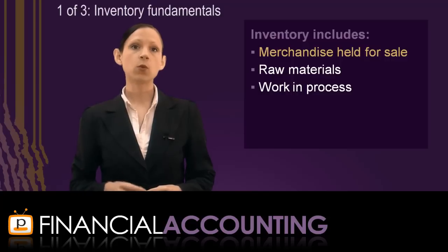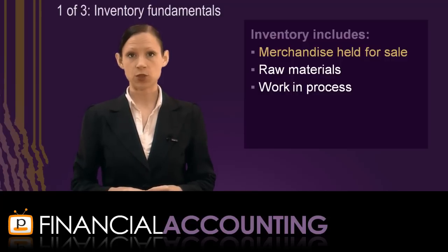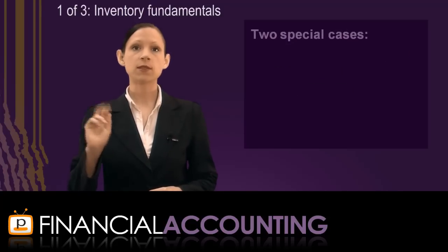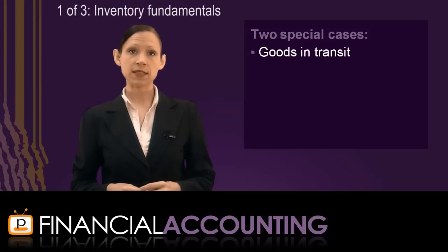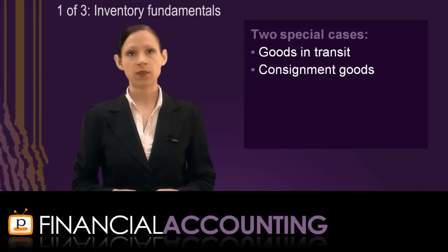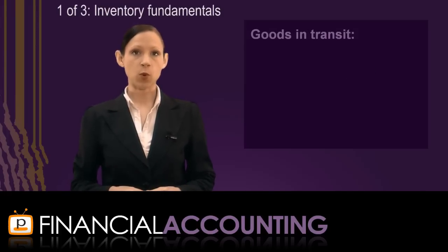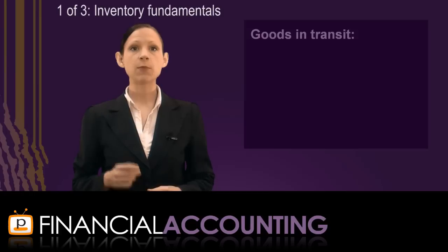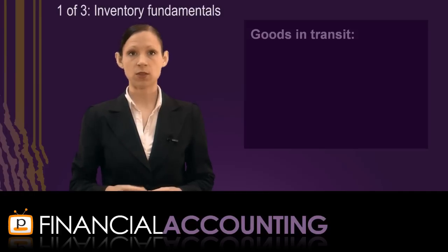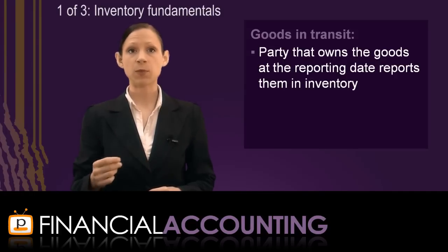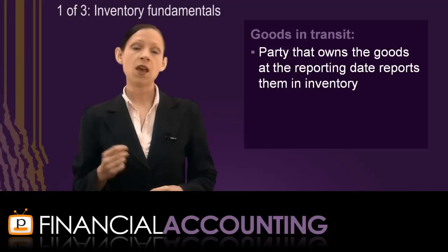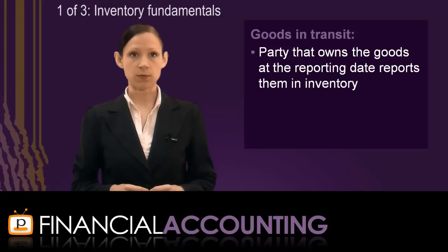At the reporting date, we need to know how much inventory the business is to report on their balance sheet. But there are two cases where it is not completely clear who should report the goods as part of their inventory: goods in transit and consignment goods. When goods are in transit at the reporting date, it is the party that holds the title to the goods at the reporting date who owns the goods and reports them as part of their inventory. The title is determined by the shipping terms.